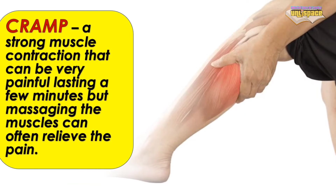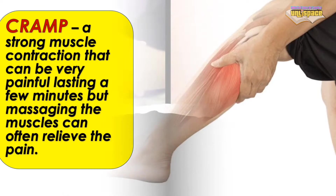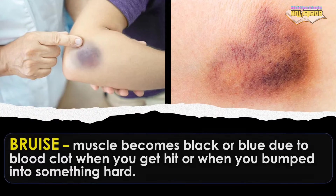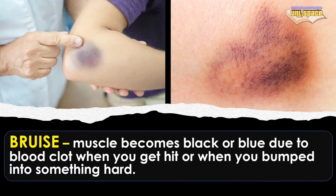A sprained ligament brings so much pain and swelling in the injured part. Cramp is a strong muscle contraction that can be very painful, lasting a few minutes, but massaging the muscles can often relieve the pain. Bruise: muscle becomes black or blue due to blood clot when you get hit or bump into something hard.